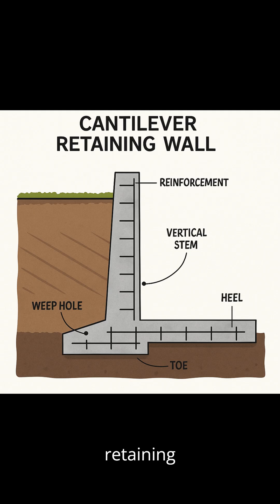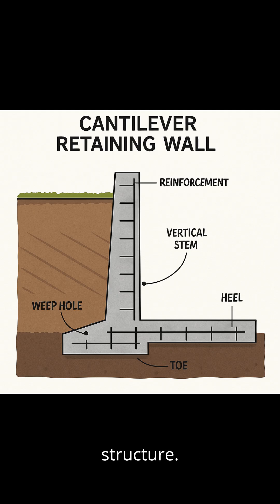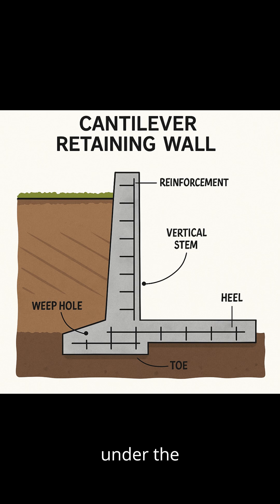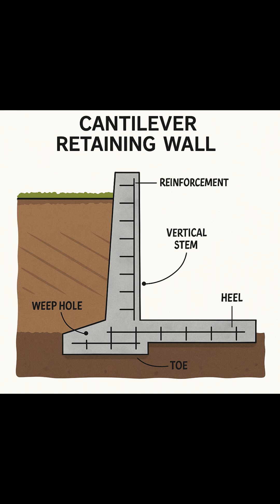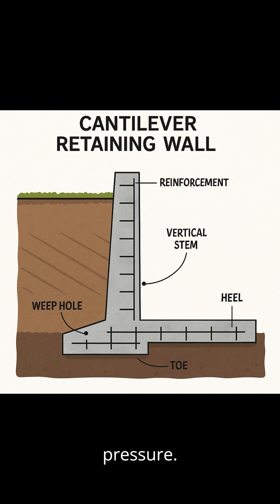Cantilever retaining wall. Reinforcement is provided inside the wall structure. The vertical stem supports the retained soil. The heel extends under the retained soil, and the toe extends outward on the front side. A weep hole helps in releasing water pressure.